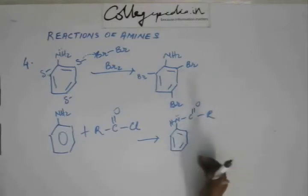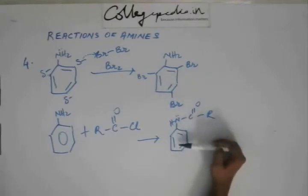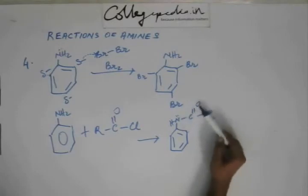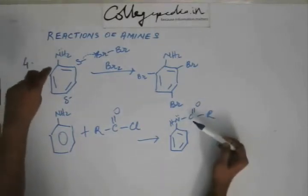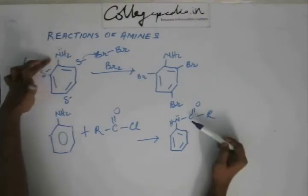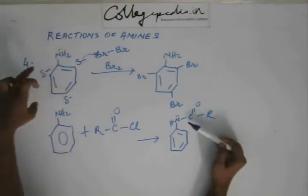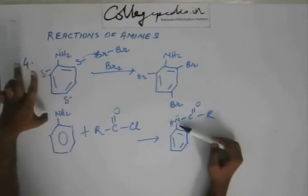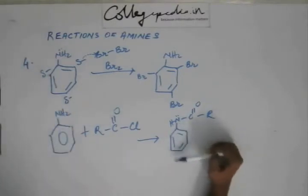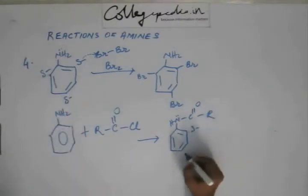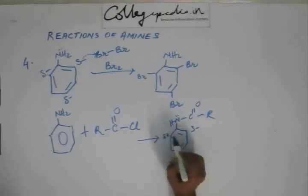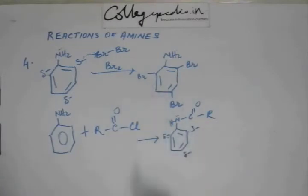So the extent of resonance of nitrogen with the phenyl ring decreases, because nitrogen is also doing resonance with the C=O. The amount of resonance nitrogen was showing with the phenyl ring has been decreased due to cross-conjugation. So this ring is less activated. The charges at ortho and para positions are less, and the extent of reaction is reduced.